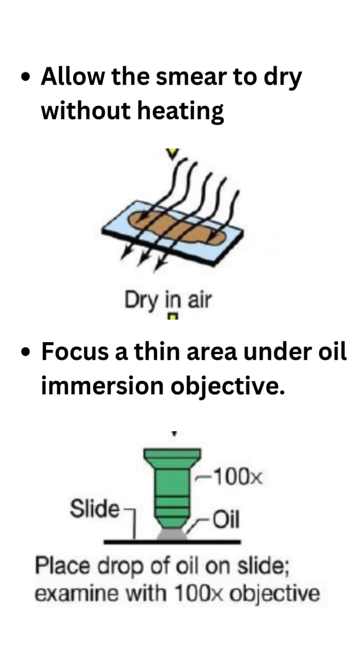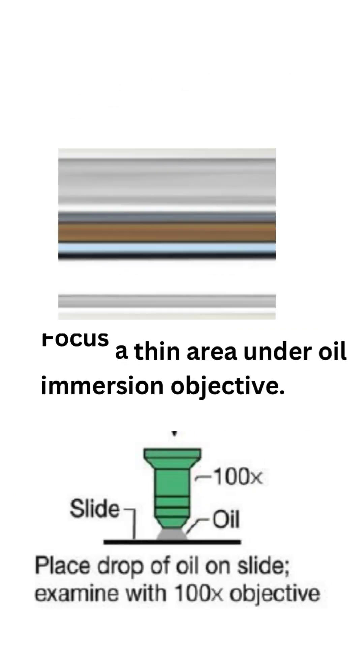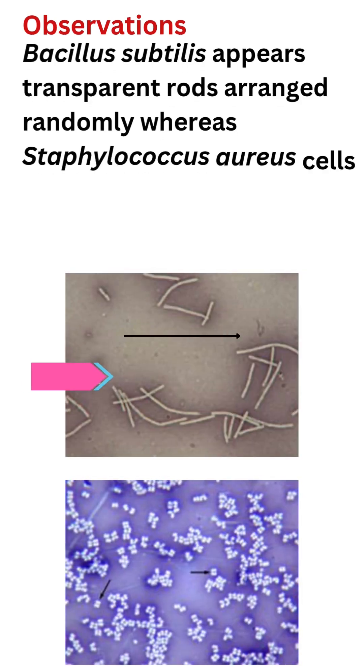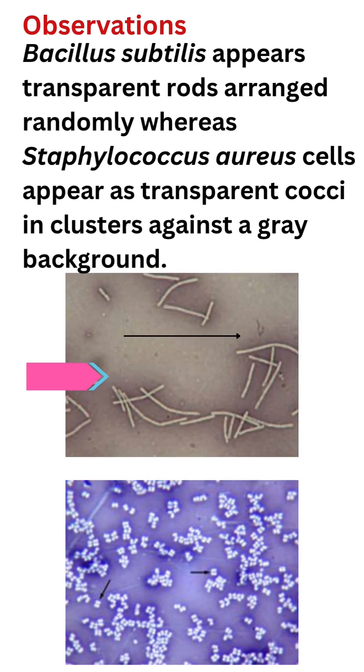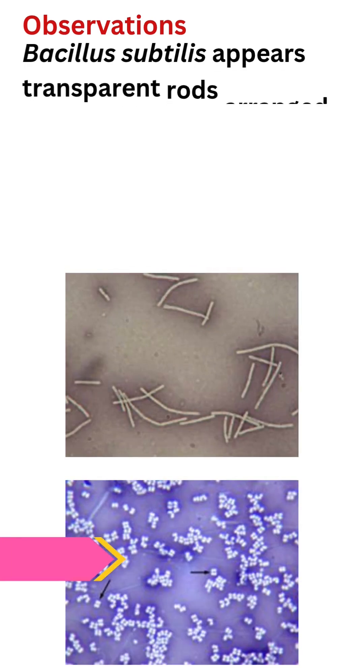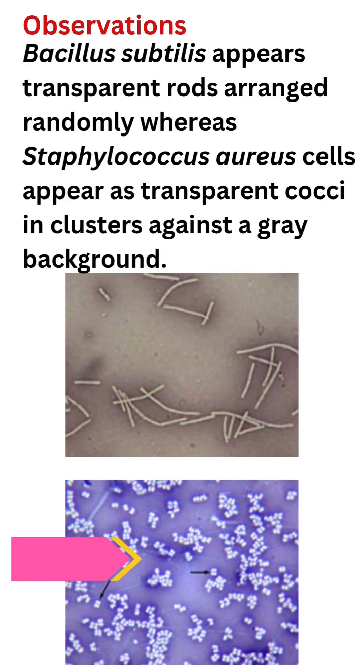Allow the smear to dry without heating. Then focus a thin area under oil immersion objective. Bacillus subtilis appears as transparent rods arranged randomly, while Staphylococcus aureus cells appear as transparent cocci in clusters against a grey background.